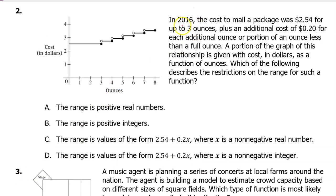Number 2. In 2016, the cost to mail a package was $2.54 for up to 3 ounces, plus an additional cost of 20 cents for each additional ounce or portion of an ounce less than a full ounce. A portion of the graph of this relationship is given with cost in dollars as a function of ounces. Which of the following describes the restrictions on the range for such a function?